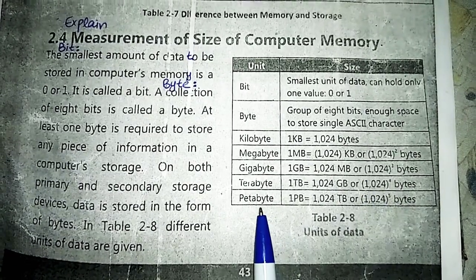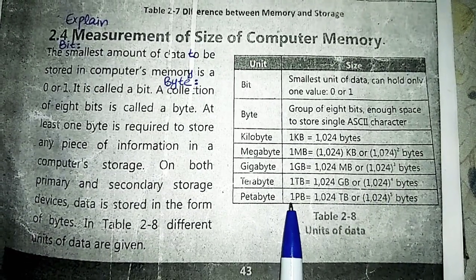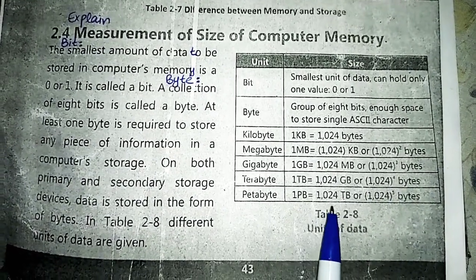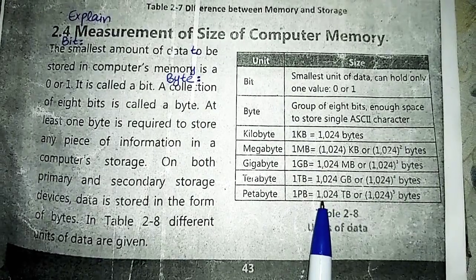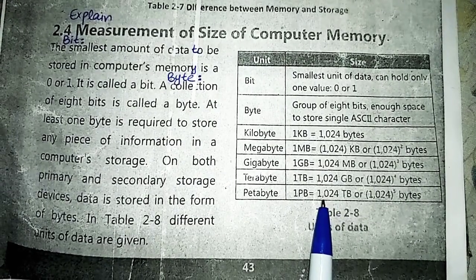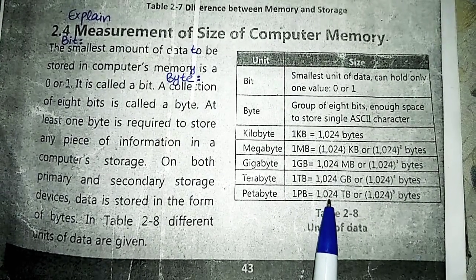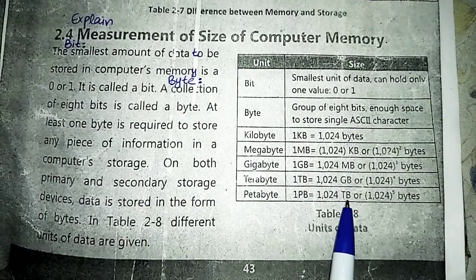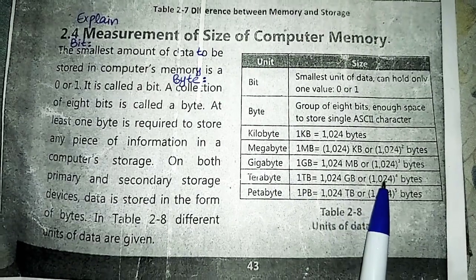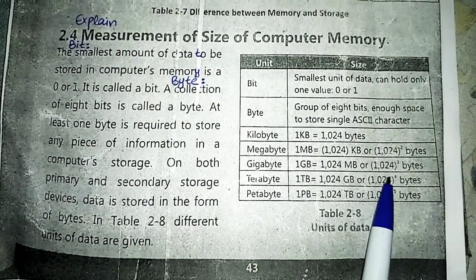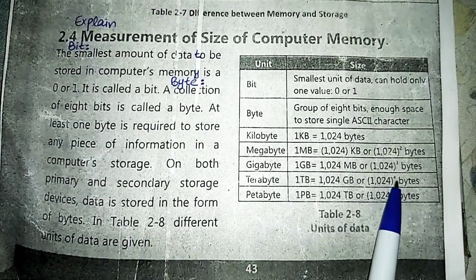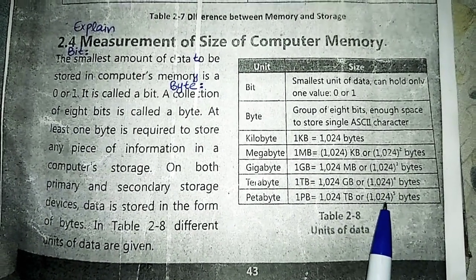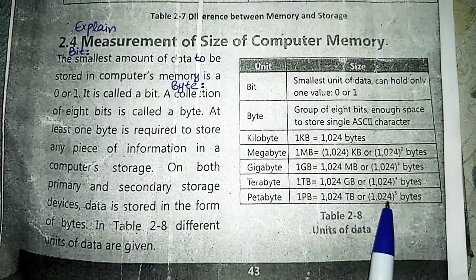Next is petabyte. Petabyte is represented by PB. One petabyte is equal to 1,024 terabytes. Since terabyte was expressed as 1,024 power 4 bytes, multiplying by 1,024 gives us 1,024 power 5 bytes.